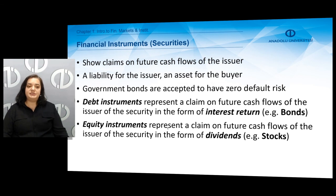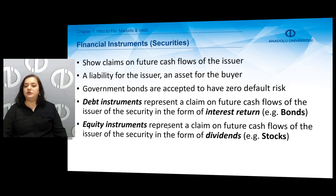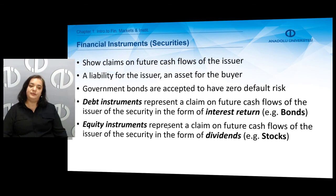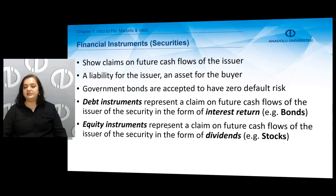We can classify financial instruments as debt instruments or equity instruments. Debt instruments represent a claim on future cash flows of the issuer in the form of interest return — investors expect to receive some interest return. Equity instruments represent a claim on future cash flows in the form of dividends. When companies issue stocks, investors can receive dividends out of the net profit.